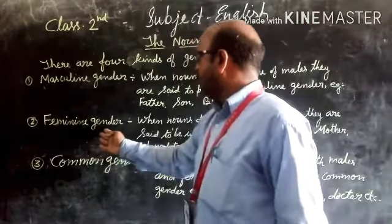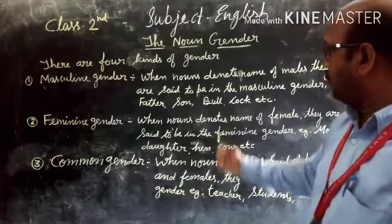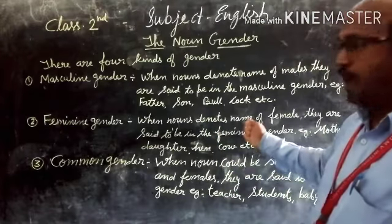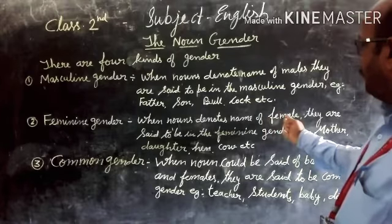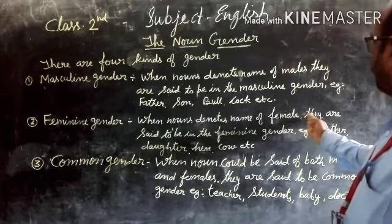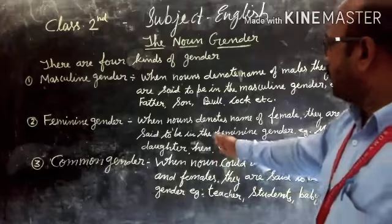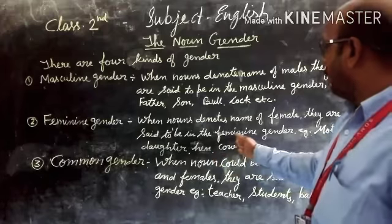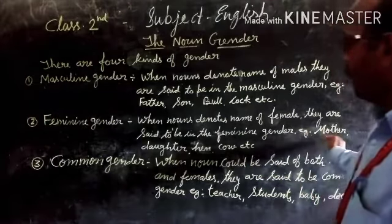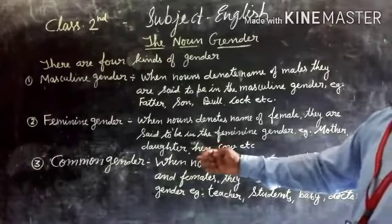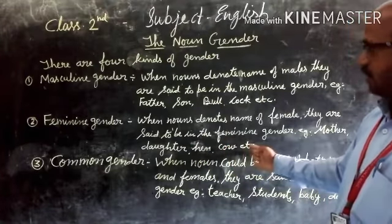The second is feminine gender. When nouns denote the name of females, they are said to be in the feminine gender. Examples: mother, daughter, hen, cow, etc.